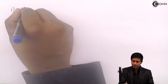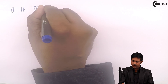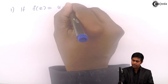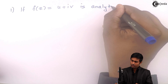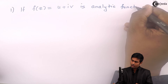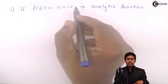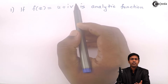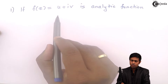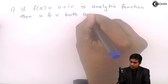The first property: if f(z) = u + iv is an analytic function, then u and v can be in terms of x and y (Cartesian form) or in terms of r and theta (polar form). If f(z) is analytic, then both u and v are harmonic.